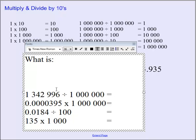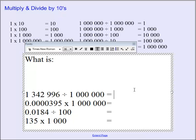Okay, having a look at these, we've got 1,342,996 and we're dividing by 1,000,000. So that's six 0s. The decimal point is at the end of the number, so we've got to go back six times. So 1, 2, 3, 4, 5, 6. So we end up with 1.342996.